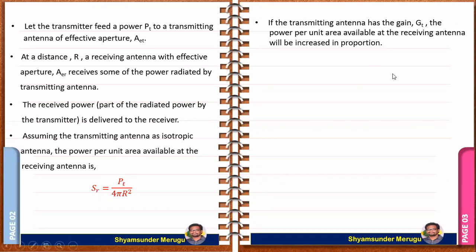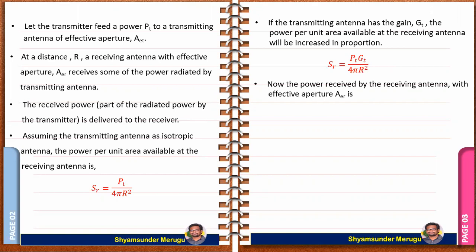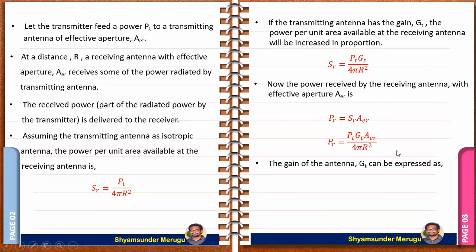If the transmitting antenna has a gain GT, the power per unit area available at the receiving antenna will be increased in proportion, so SR will be equal to PT·GT by 4πR². Now the power received by the receiving antenna with effective aperture AER is PR equal to SR multiplied by AER. Substituting the value of SR, we get PR equal to PT·GT·AER by 4πR².